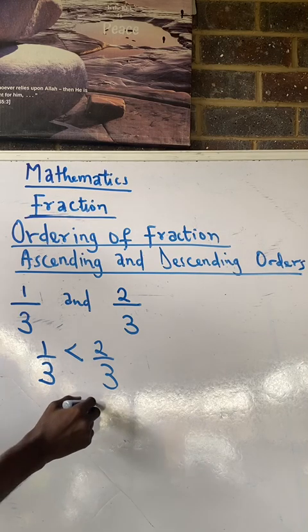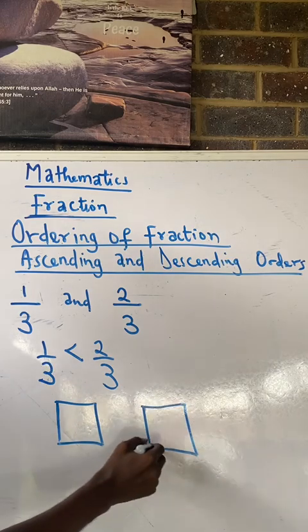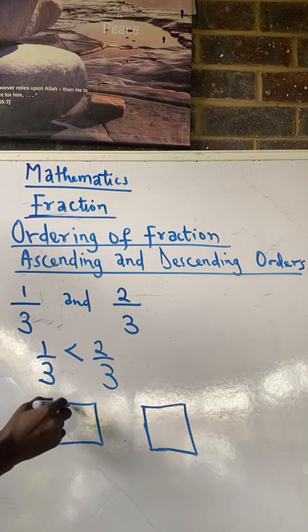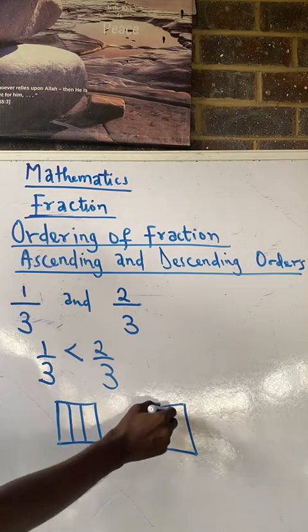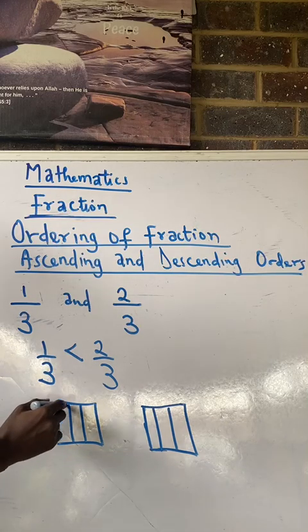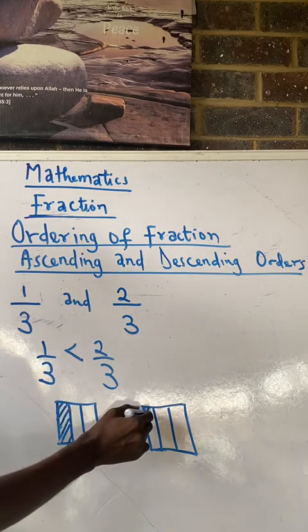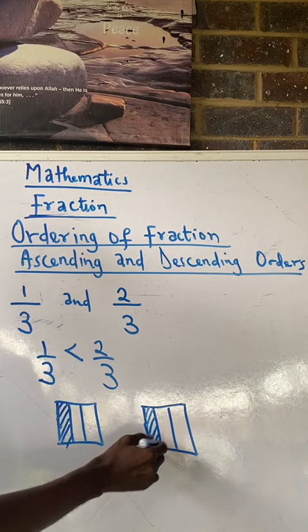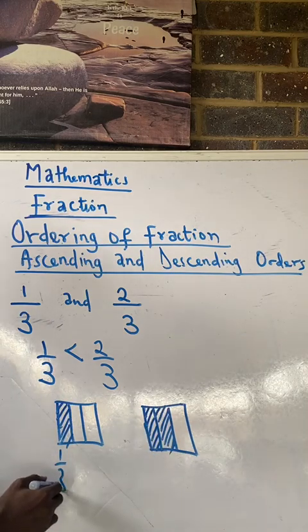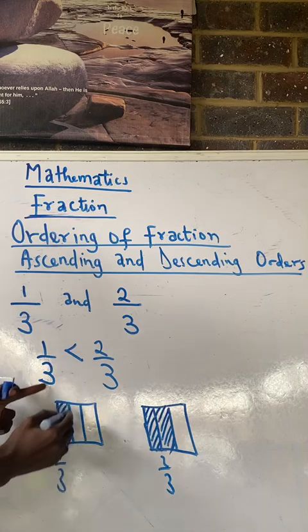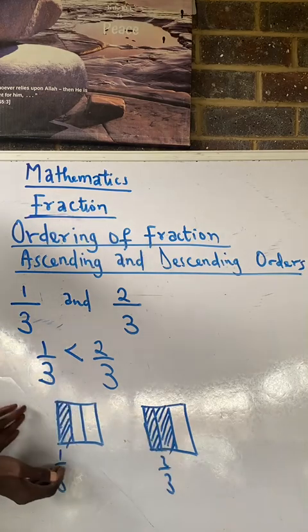If I have a box and I have another box the same size and I divide both of them into 3 equal parts. 1, 2, 3. So 1 over 3 means shade 1 out of the 3 parts. That's 1 over 3. But 2 over 3 means shade 2 out of the 3 parts. This one is 1 over 3 while this is 2 over 3. Now compare the size of each. Which one is bigger? So that means 2 over 3 is bigger than 1 over 3.